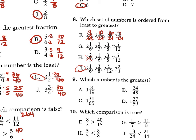Problem 9 asks which number is greatest. Converting to decimals: the first is approximately 1.421, C is 31 over 65 which is approximately 1.477, 24 over 45 gives approximately 1.533 repeating, and 27 over 59 is approximately 1.458. The greatest is B, which is 24 over 45.